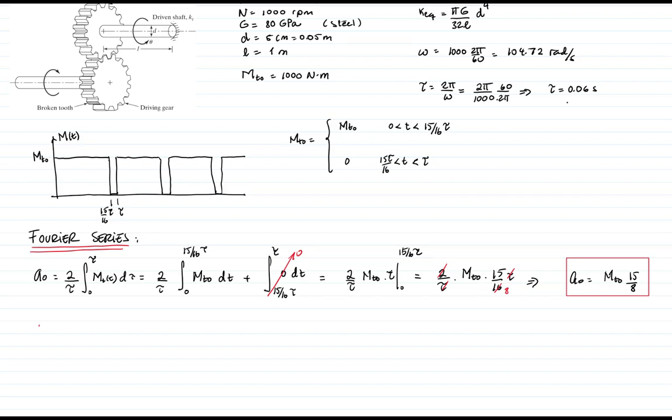Now I have to find the coefficients aₙ: 2/τ times the integral from 0 to τ of m₀ cosine(j ω t) dt. Since this is a constant, I can take it out of the integral. And then I just have the integral of cosine.